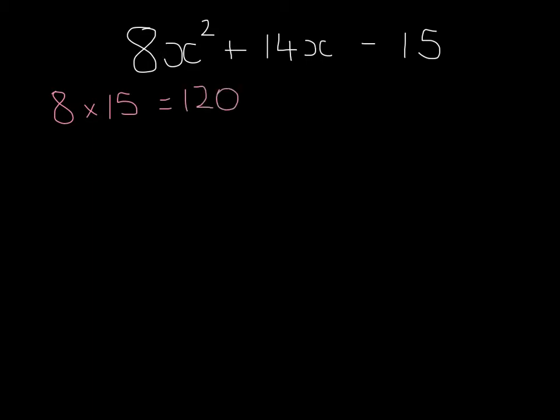I'm looking for two numbers that multiply to give 120 and subtract to give 14. Two numbers that multiply to 120 and subtract to 14 must be 20 and 6.